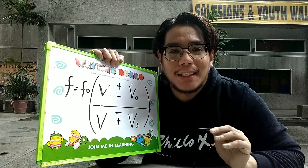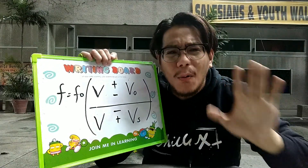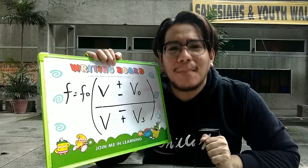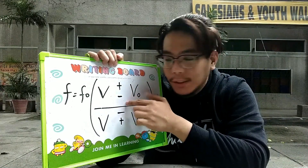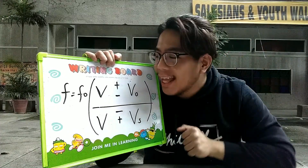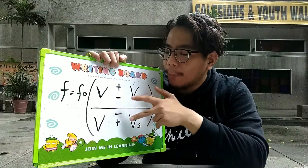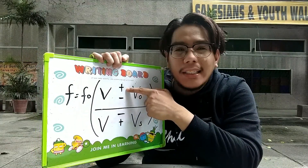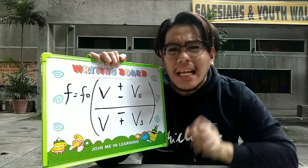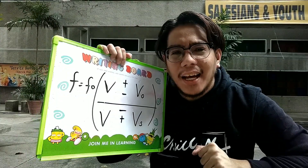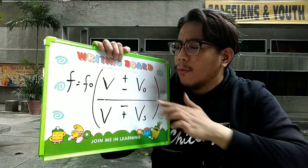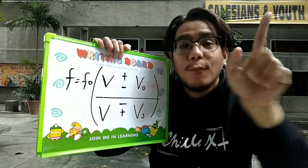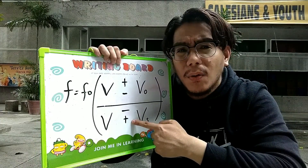Alam kong na mind blown kayo sa una kong example. Ang pinaka-importante mong tatandaan ay yung position ng mga symbol. For the numerator: plus, minus. At sa denominator naman: minus, plus. Tatandaan ulit natin na lahat ng nasa upper sign — sa numerator is the plus, and for the denominator is the minus — represents that the object is moving forward. Pag ang object is going away, dapat titignan natin yung lower sign nila. For the numerator, it's minus, and for the denominator, it's the plus sign.